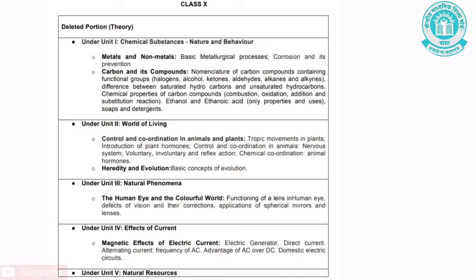Unit 4 is Effects of Current. The chapter is Magnetic Effects of Electric Current. The topics removed are: Electric Generator, Direct Current, Alternating Current, Frequency of AC, Advantages of AC over DC, and Domestic Electric Circuits.